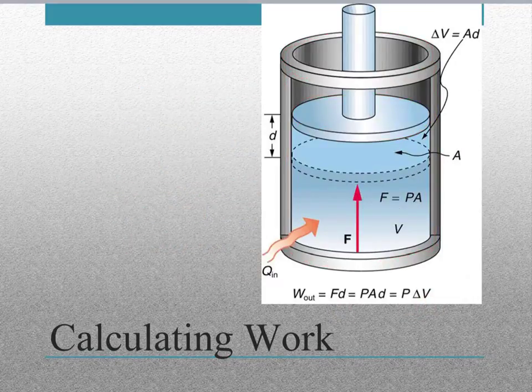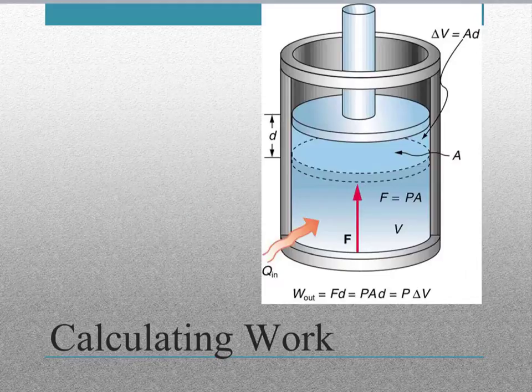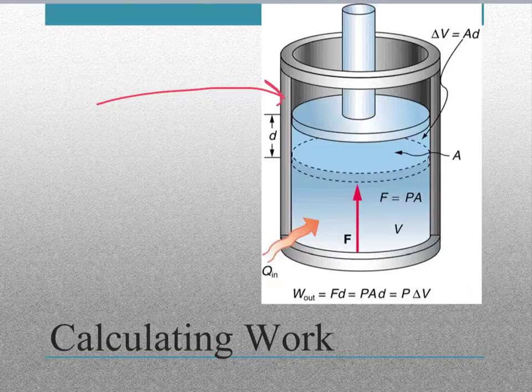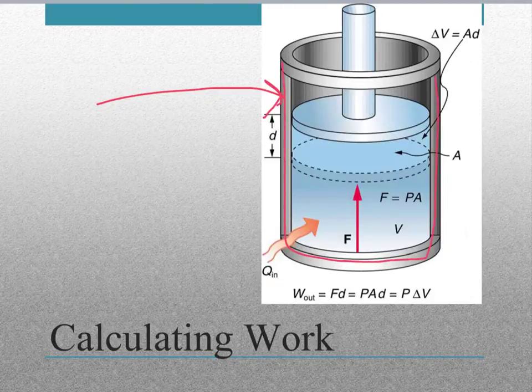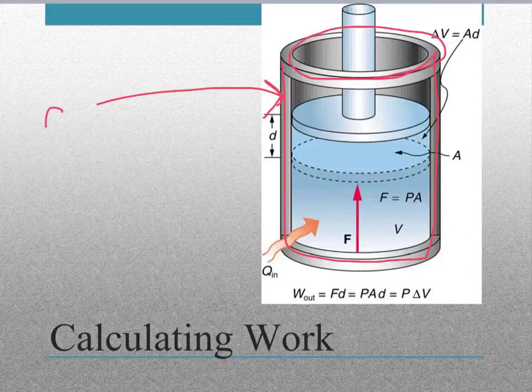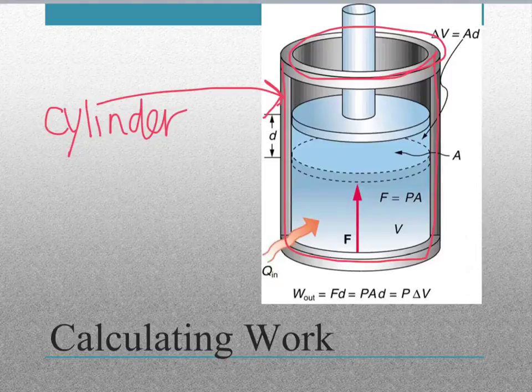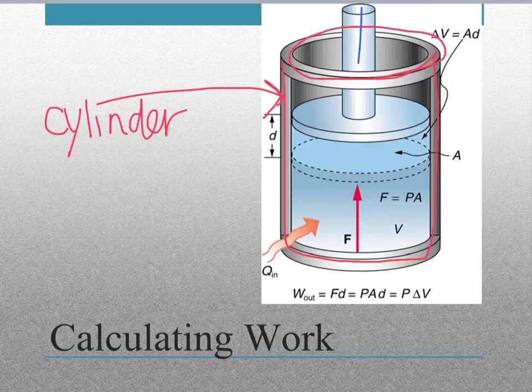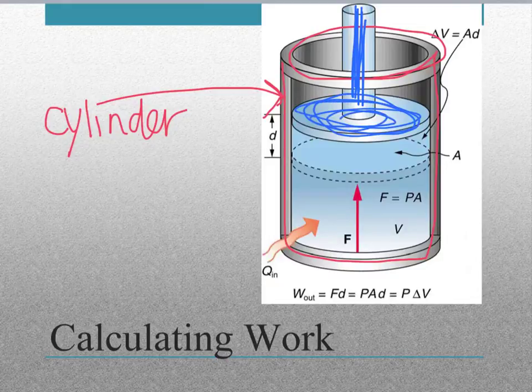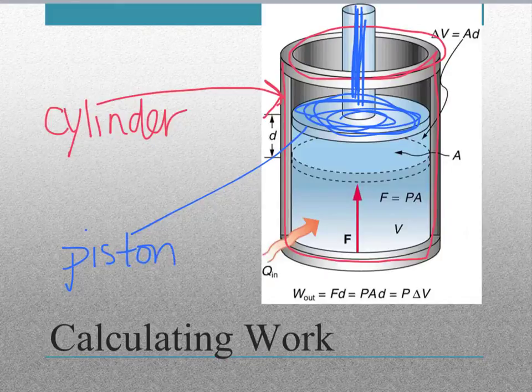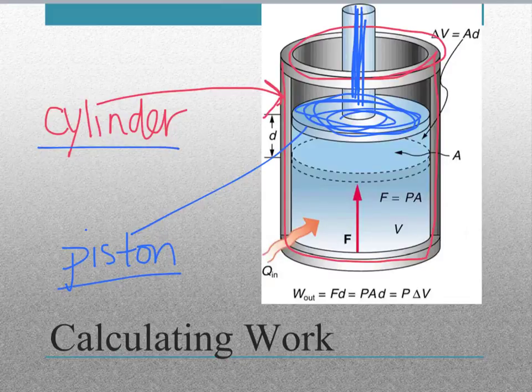So I just want to point out two vocabulary words here for you. I said them just a minute ago, but I want to make sure that you know. So here, this thing that I'm outlining in the pink pen, that is called our cylinder. And we have cylinders in all kinds of engines. And we're going to look at a real one in just a minute, but I want you to become familiar with these words. And this part here, the plate that can move up and down, that whole thing is called a piston. So we will use these words again and again as we go through the rest of the chapter. So make sure that you become familiar with those two words and what they mean.